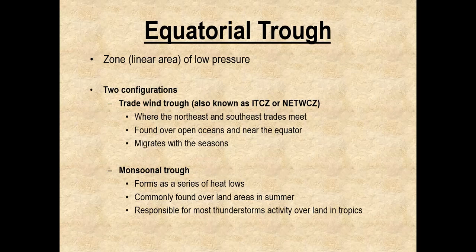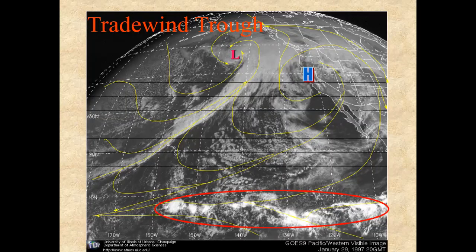Another type of trough found in the tropics is the monsoonal trough, which forms as a series of heat lows commonly found over land areas in the tropical portions of the globe in the summertime. The monsoonal trough is responsible for most thunderstorm activity over land in the tropics.